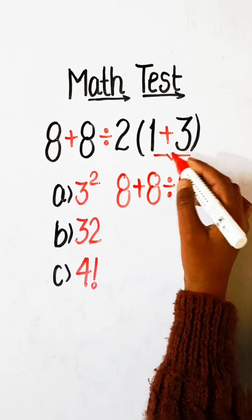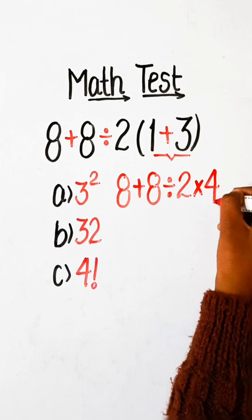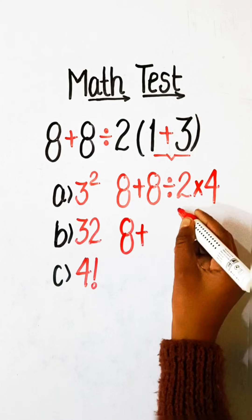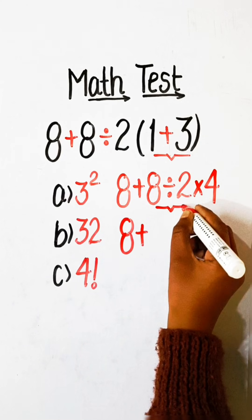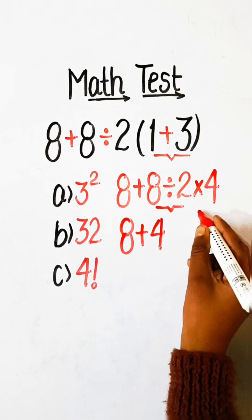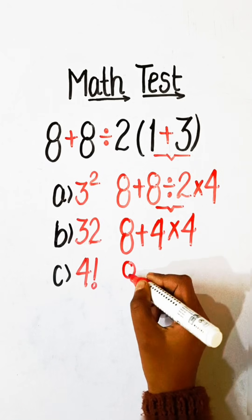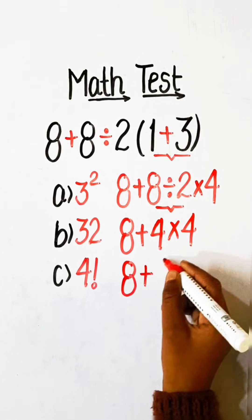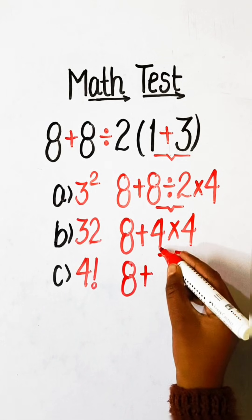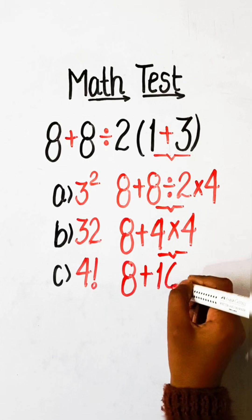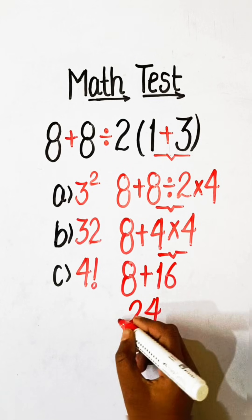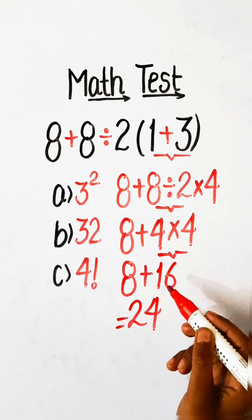2 multiplied by (1 plus 3) is 4. First we have to divide: 8 divided by 2 is 4, multiplied by 4.